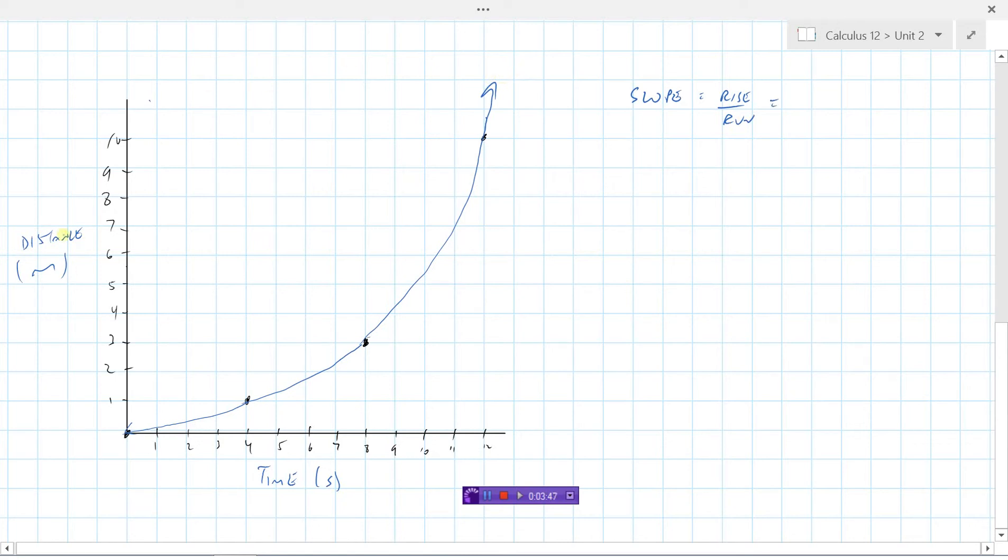The rise are my y values so that's going to be something in meters. We use this symbol delta to represent change in, so we're going to have a certain number of meters divided by the run which is a certain number or change in seconds. So the slope of this curve is going to represent meters per second, which we know is speed.